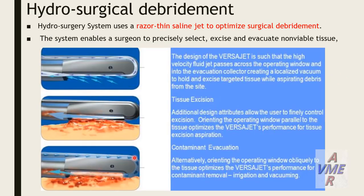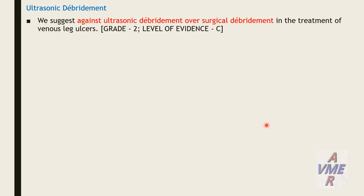Hydrosurgical debridement is a system with a razor-thin saline jet to optimize surgical debridement. The system enables surgeons to precisely select, excise, and evacuate non-viable tissue using a fine razor with saline suction, making more precise excision and removing necrotic tissue without affecting healthy tissue. This system is called the VersaJet system. The American Venous Forum suggests against ultrasonic debridement over surgical debridement and endorses surgical debridement.